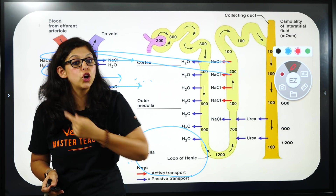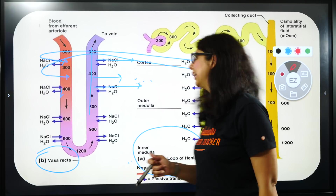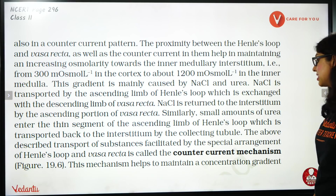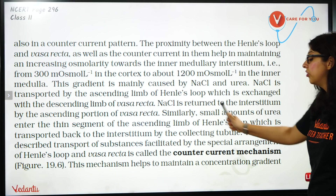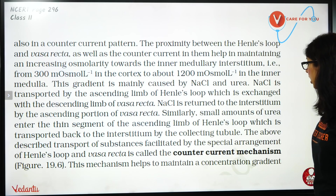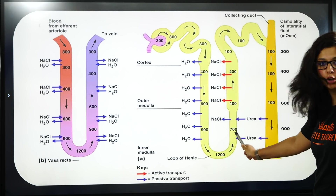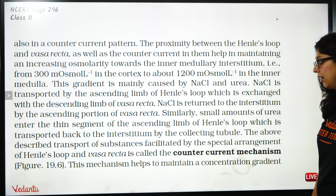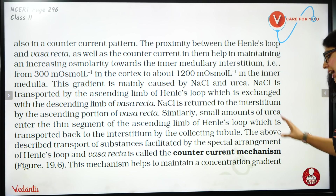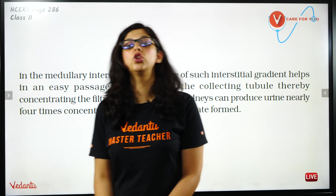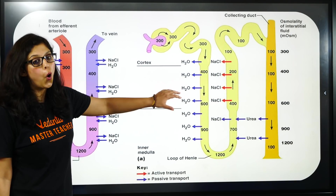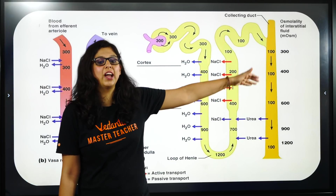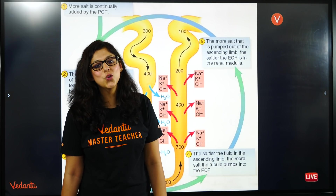जिसकी वजह से medullary interstitium का salt बढ़ जाएगा. Urea, thin segment of ascending limb में enter कर रहा है — देखो, urea जो है वो thin segment of ascending limb में enter कर रहा है — thin segment है, यह thick हो रहा है ऊपर जाके. तो यहाँ पर urea collecting duct से enter कर रहा है. इन सब की वजह से counter current established होगा, क्योंकि दोनों opposite direction में move कर रहे हैं, और इसकी वजह से जो water है वो बाहर आएगा, और इसकी वजह से urine जो है वो concentrated हो जाएगा.